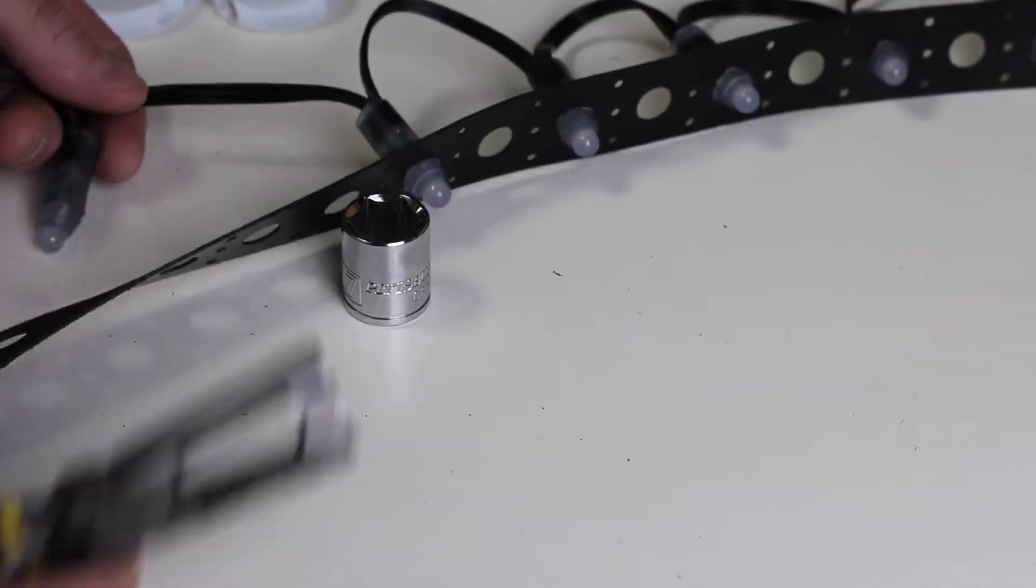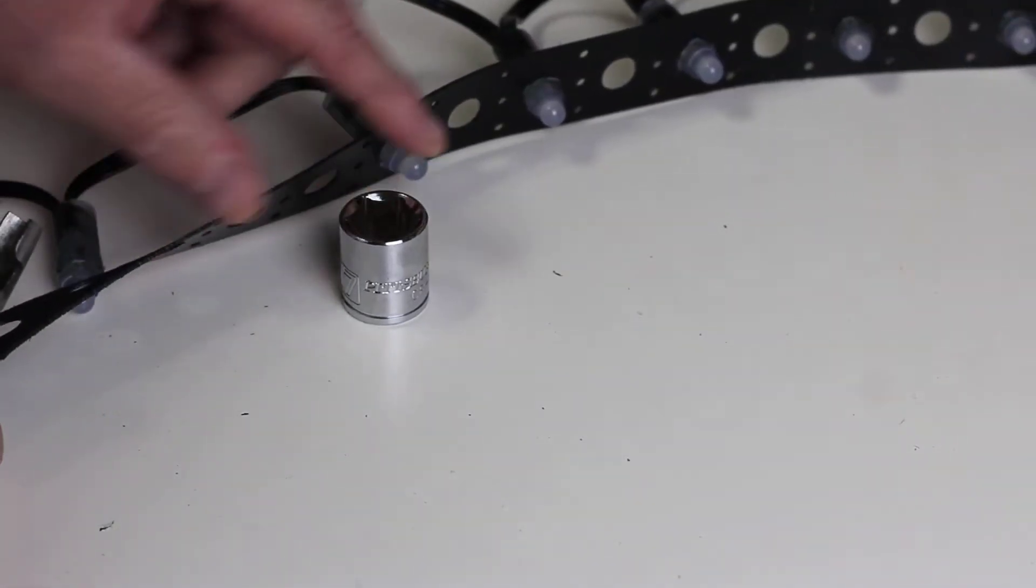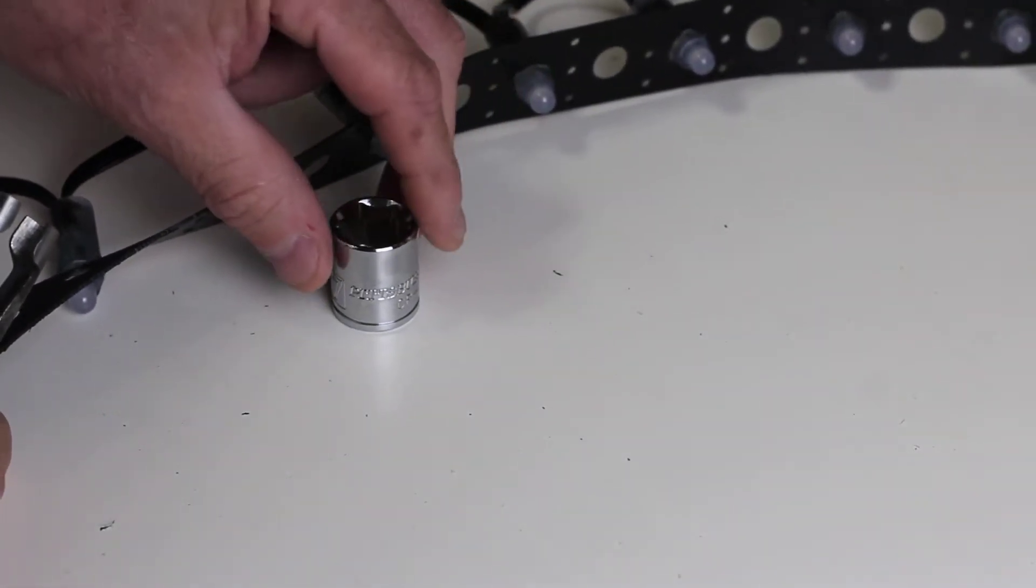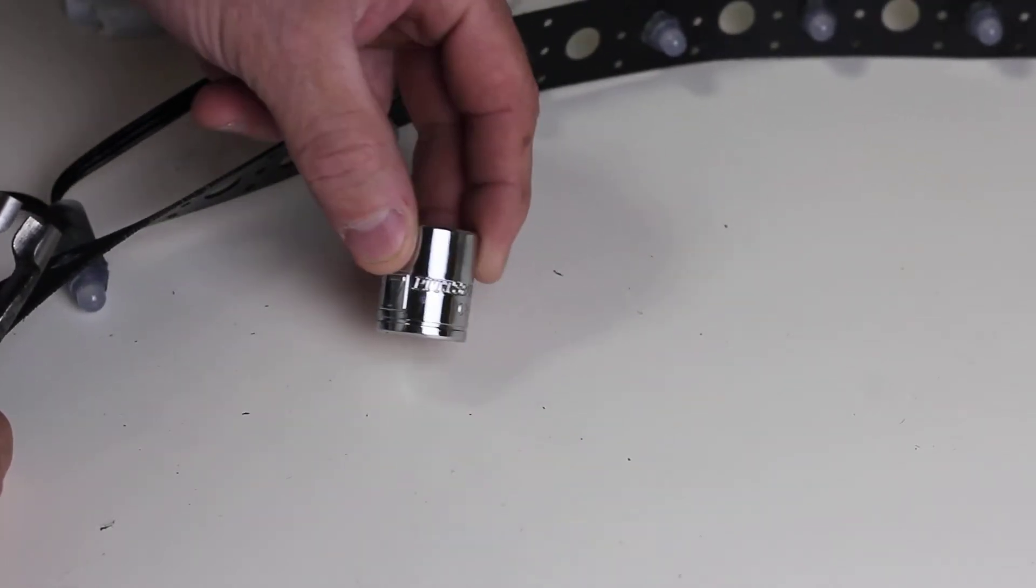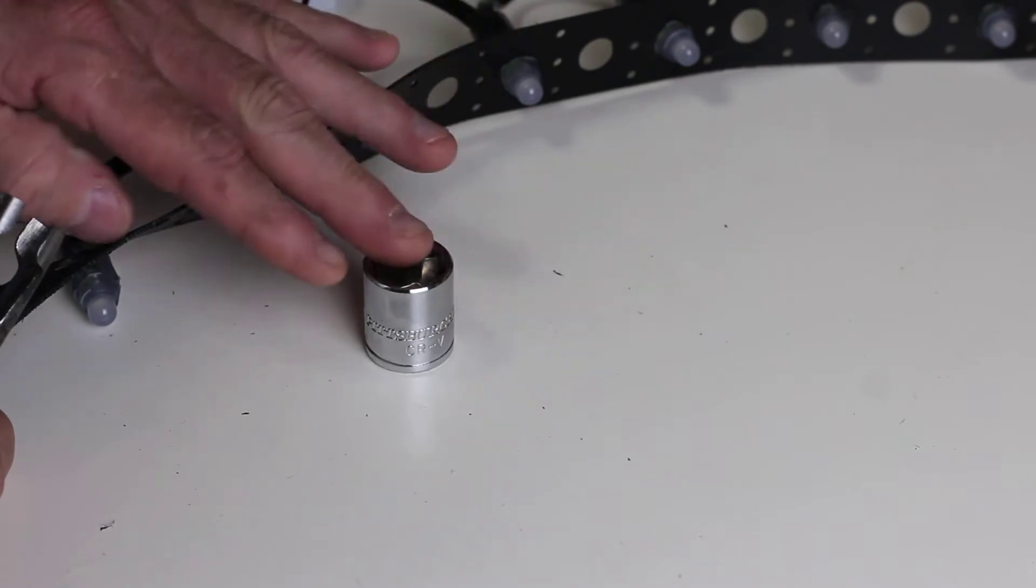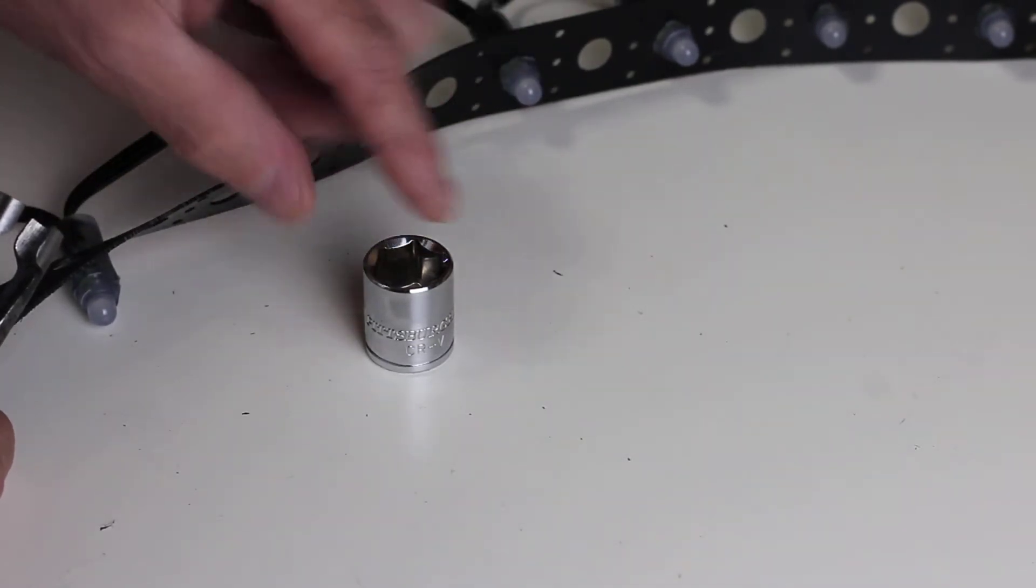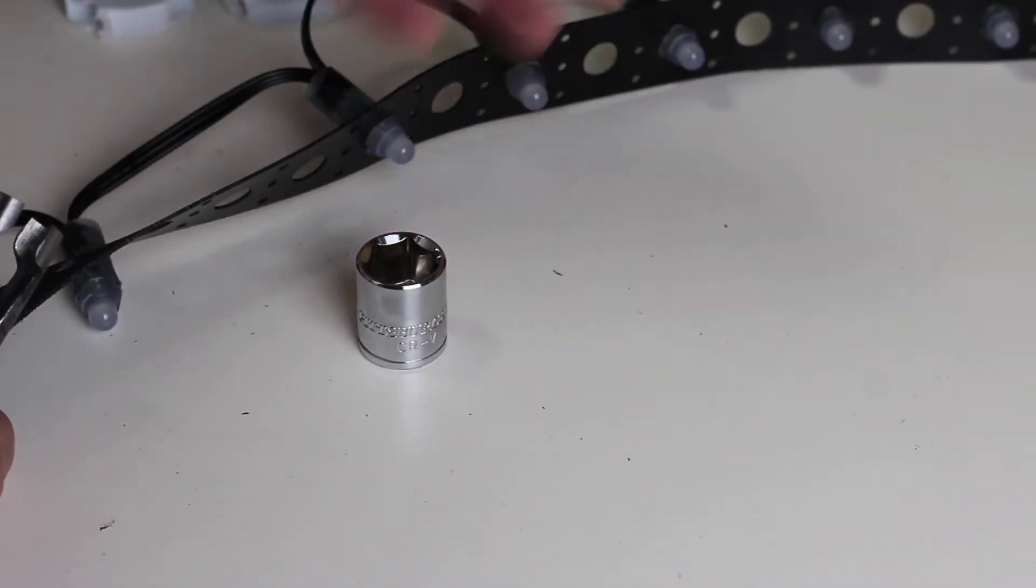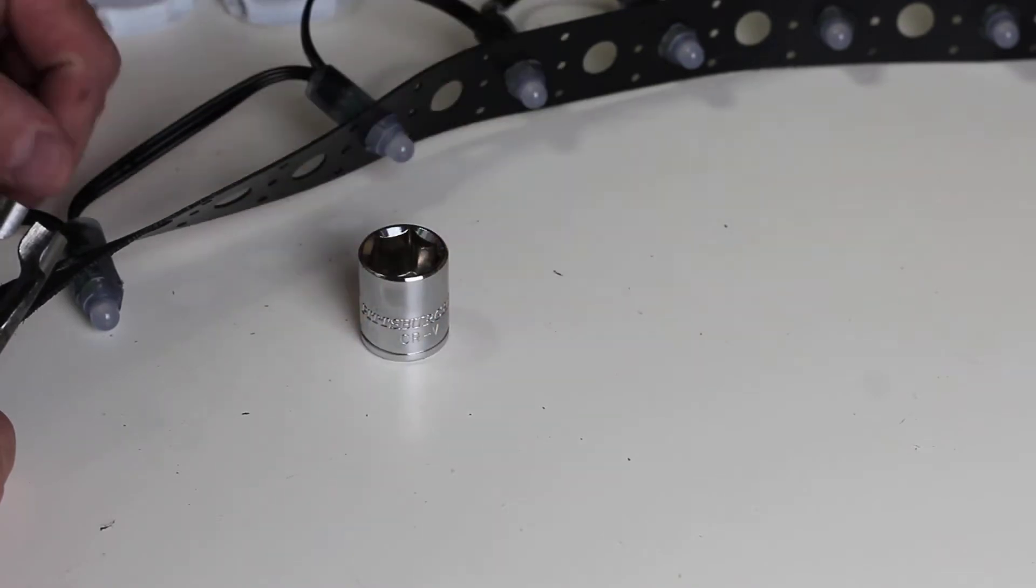Now what we want to do is first start off with something that's not included in the kit but you probably have around the house. It's usually a socket. In this particular case I'm using a 17mm socket but it can be anywhere from about a 14 to a 19mm or anywhere from about a half to a three-quarters inch socket.